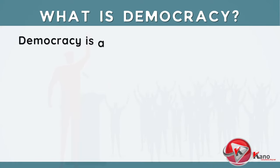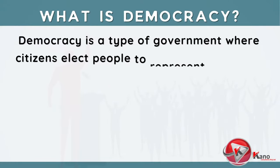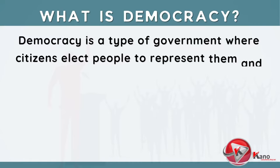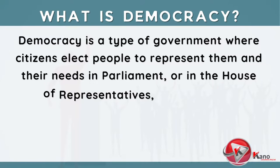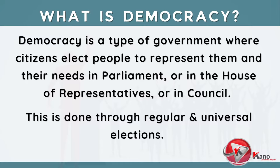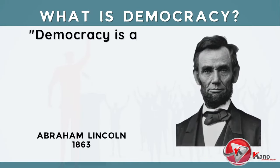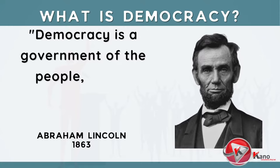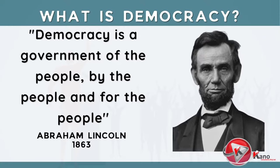Essentially, democracy is a type of government where citizens elect people to represent them and their needs in parliament, or in the house of representatives, or a senate, or on a municipal council. This is done through regular and universal elections. That is why democracy is often referred to as government of the people, by the people, for the people.